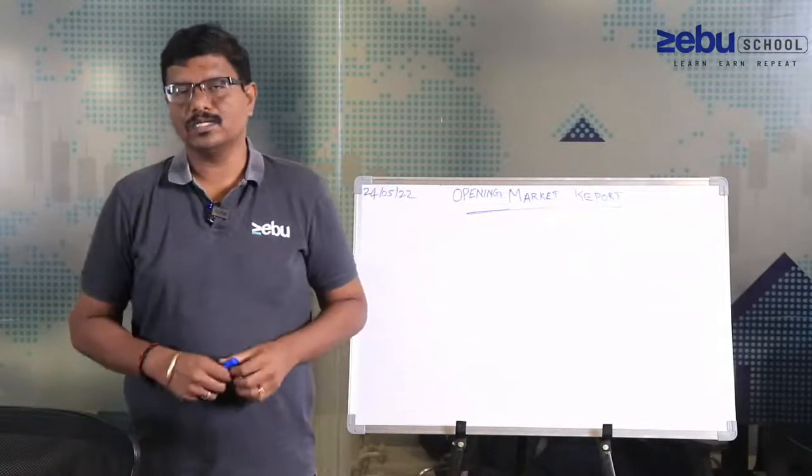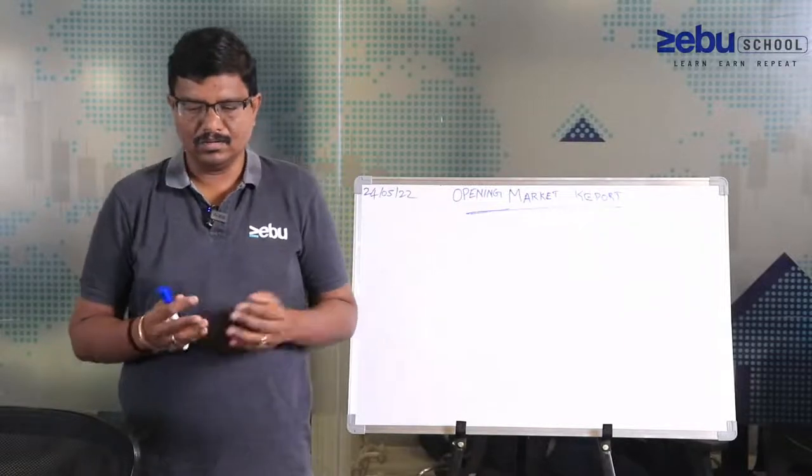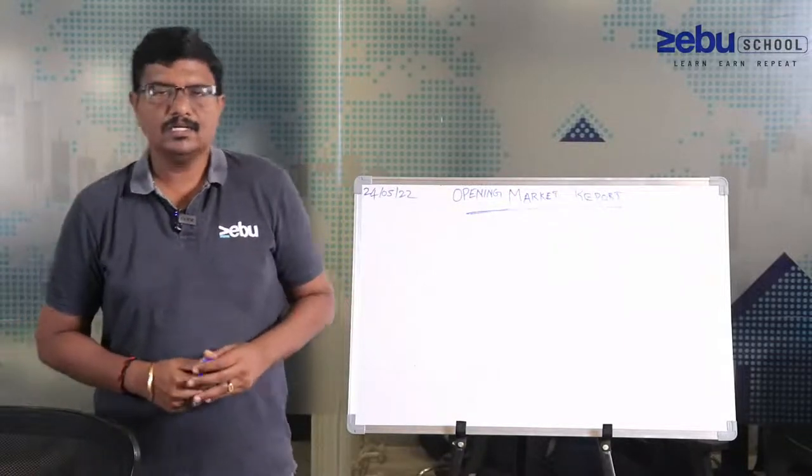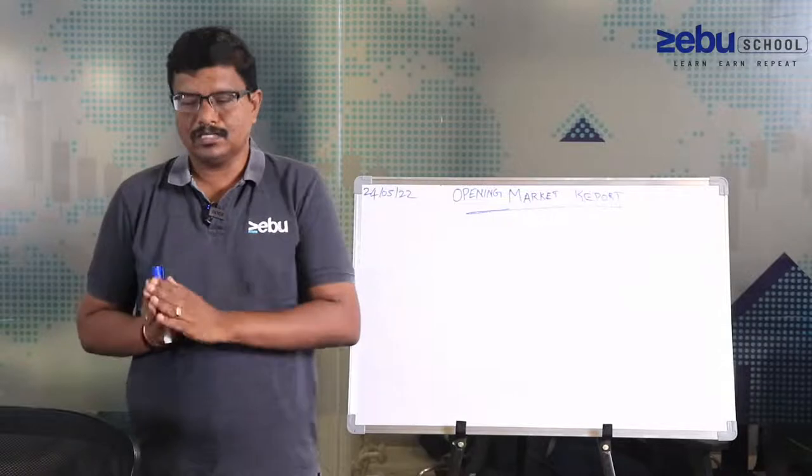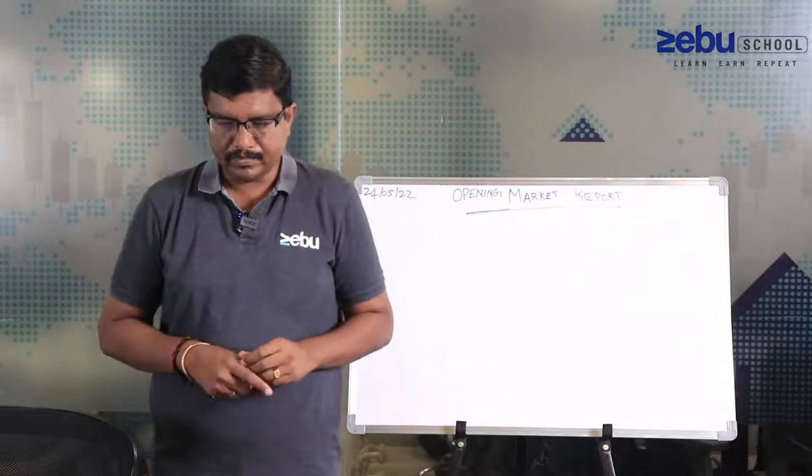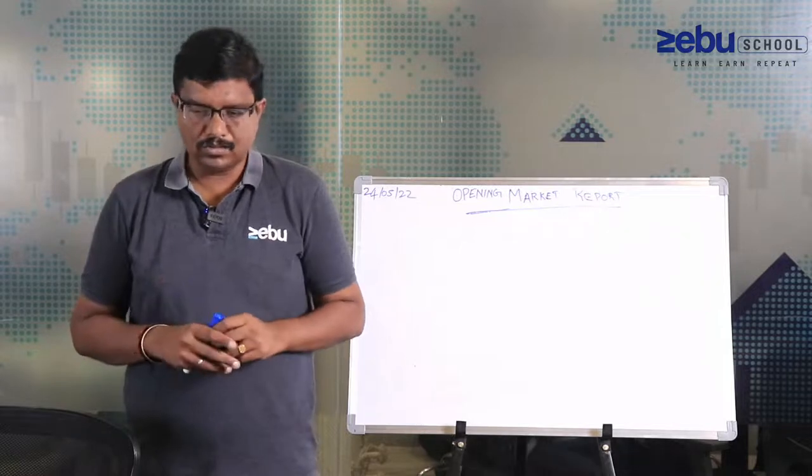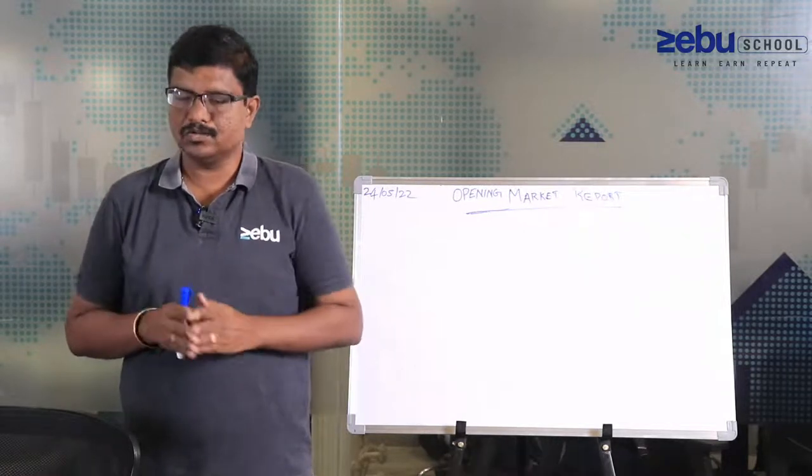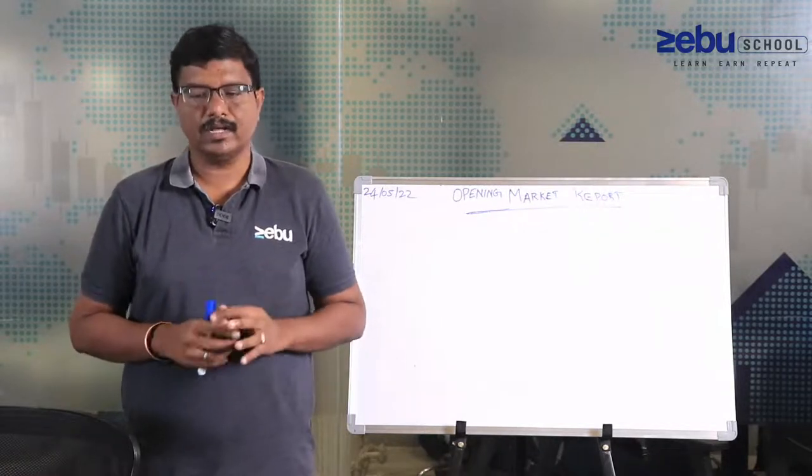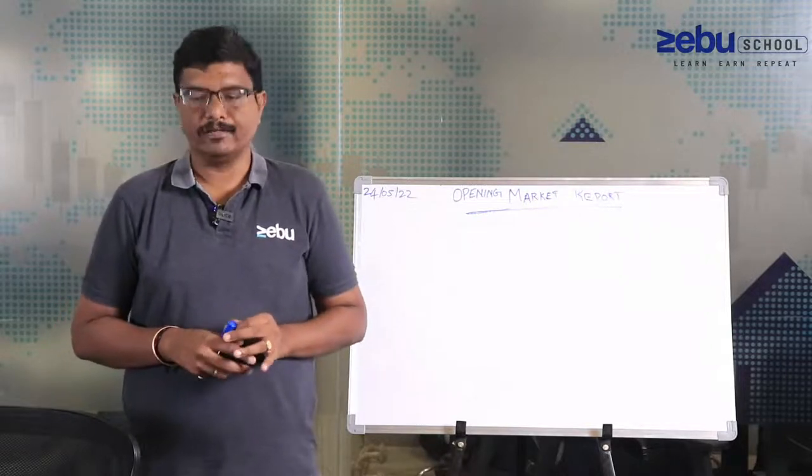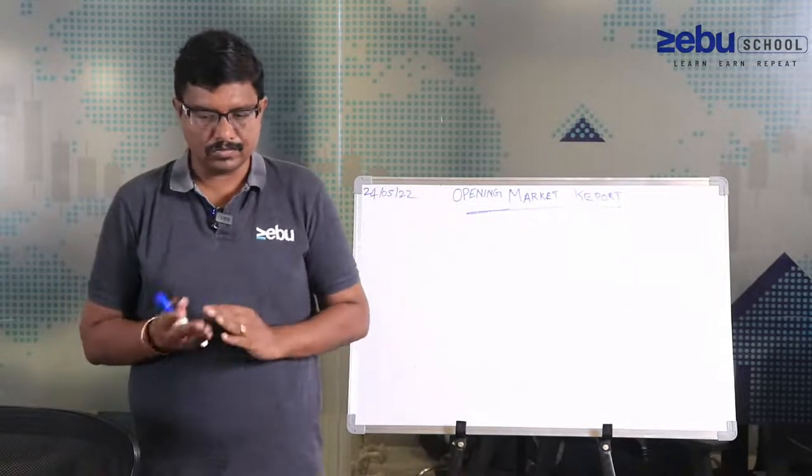Hi all, welcome to today's market opening report. Looking at where the market is, the time now is around 9:35. Nifty is trading around 16,180, down 35 points from yesterday's closing, and Bank Nifty is up, trading around 34,395, up 150 points for the day.